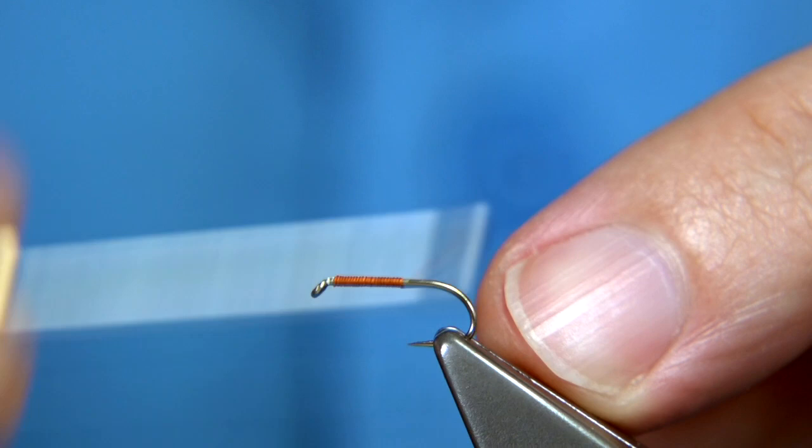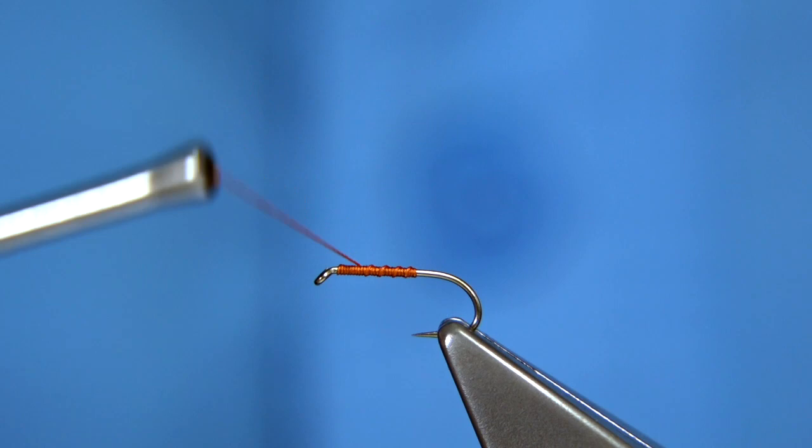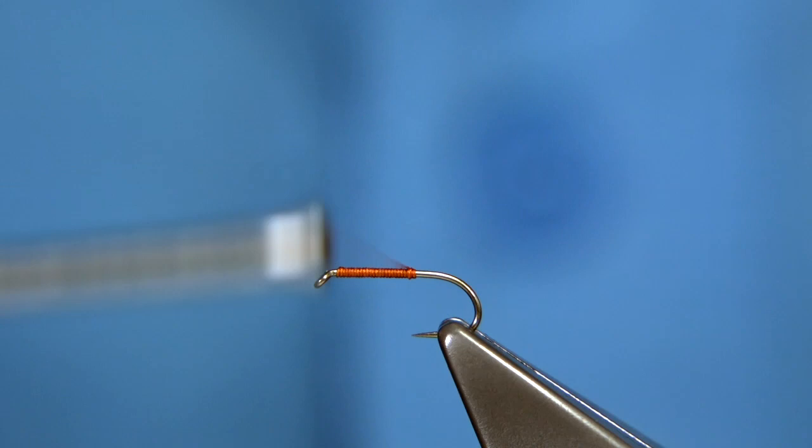Now you can rib the fly, meaning just come up with the thread like a rib, or you can, what most would probably do is come back up with touching turns. All the way up.